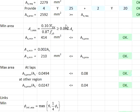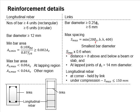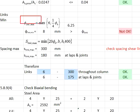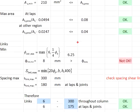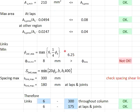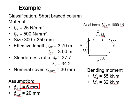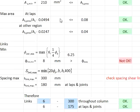Therefore it is considered satisfactory. Now we look into the links of the column. The bar size is determined by one-quarter of the bar diameter and at least 6 mm for the link. Substitute the value into this formula — a 25 mm bar size was used, therefore the minimum link size will be equal to 6.25 mm. You know that there is no link of this size, so the closest link size greater than this value will be 8 mm. The question suggested the provided link equals 6 mm, which is less than this value, therefore it is not satisfactory.